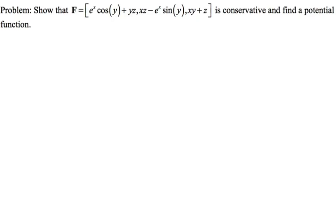For the potential function, the first thing you want to do is look at the vector field and realize that we're now saying it's a gradient vector field. So the first component should be partial x, partial y, and partial z. The way I'm going to do this is look at partial x and integrate with respect to x, partial y and integrate with respect to y, partial z and integrate with respect to z. It's those constants of integration that really make this work out.